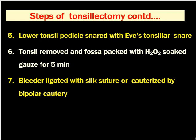At the lower pole there is a pedicle, which is snared with the tonsil snare. The advantage of the tonsil snare is that it cuts and crushes, helping to reduce bleeding by activating the coagulation pathway, leading to coagulation of tissue and blood vessels. Simply using a blade or scissors to cut the lower pole might lead to bleeding. After removal, the tonsillar fossa is packed with gauze soaked in hydrogen peroxide for five minutes. Hydrogen peroxide releases nascent oxygen, producing heat, which causes thermal cauterization of the tonsillar fossa, sealing small blood vessels.